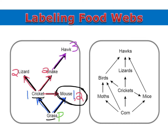Now when you're answering food web questions, you may only need to know about a specific organism. So in this second food web, let's just see what the birds are. We'll start by putting a P over the corn. Going up, it makes the moths a primary consumer and the birds a secondary consumer. But notice that the birds also just eat corn directly, making them a primary consumer. Going through crickets, the crickets are primary, but that also makes the birds a secondary consumer.